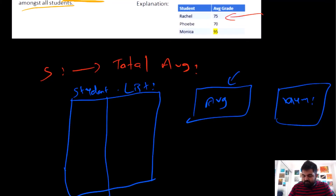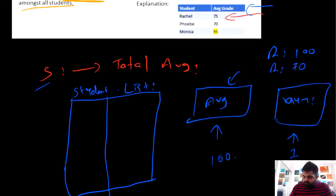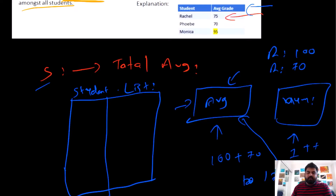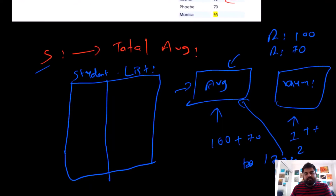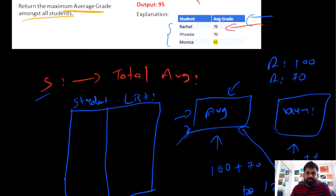My strategy was: the moment a student gets a grade, we update the rolling average. For example, if Rachel first gets 100, the average is 100 and subjects count is 1. Then she gets 70, so we do (100 + 70) / 2 and store that. The counter question from the interviewer was: why calculate a rolling average for every entry? If there are only three students but one million grade entries, you'd be doing division — a time-consuming operation — one million times.